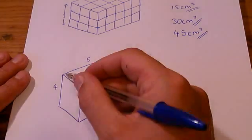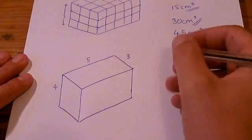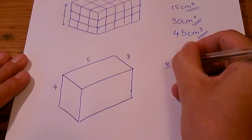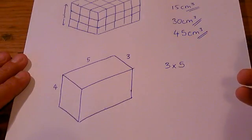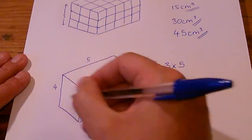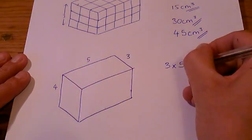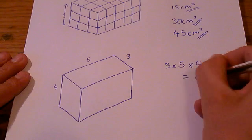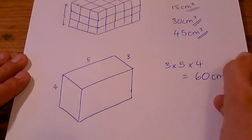Imagine again, what was that top layer? It was 3 times 5 to make 15. And then there are going to be 4 layers of cubes, so I have to multiply that by 4. And I get 60 centimetres cubed.